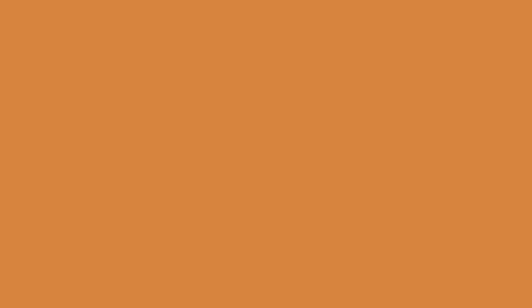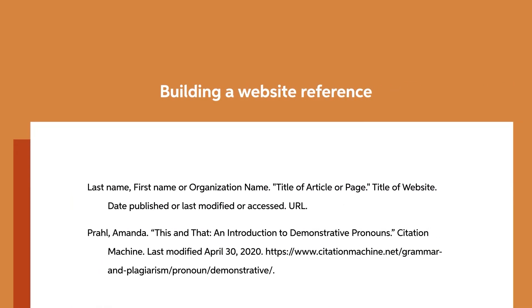With all your information in hand, you'll build the reference in your bibliography this way. Start with the last name of the author, followed by a comma, then the first name, and then a period. If you couldn't find the author's name, don't worry — just start the citation with the title of the page or article.